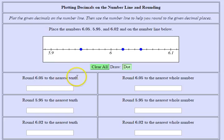Now in these questions we're asked to round to the nearest tenth and whole number for each of these values. So let's start with 6.05.